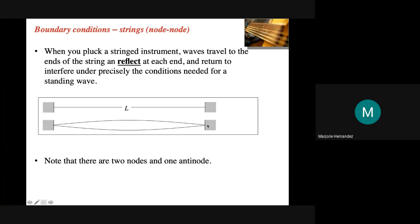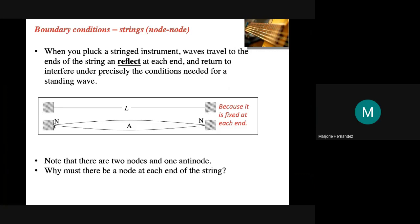The node is where there's no displacement. At the ends of the string, the string cannot move, so those will be our nodes, and the antinode will be in the middle. Why must there be a node at each end? Because the string is fixed at each end, so there's no displacement.